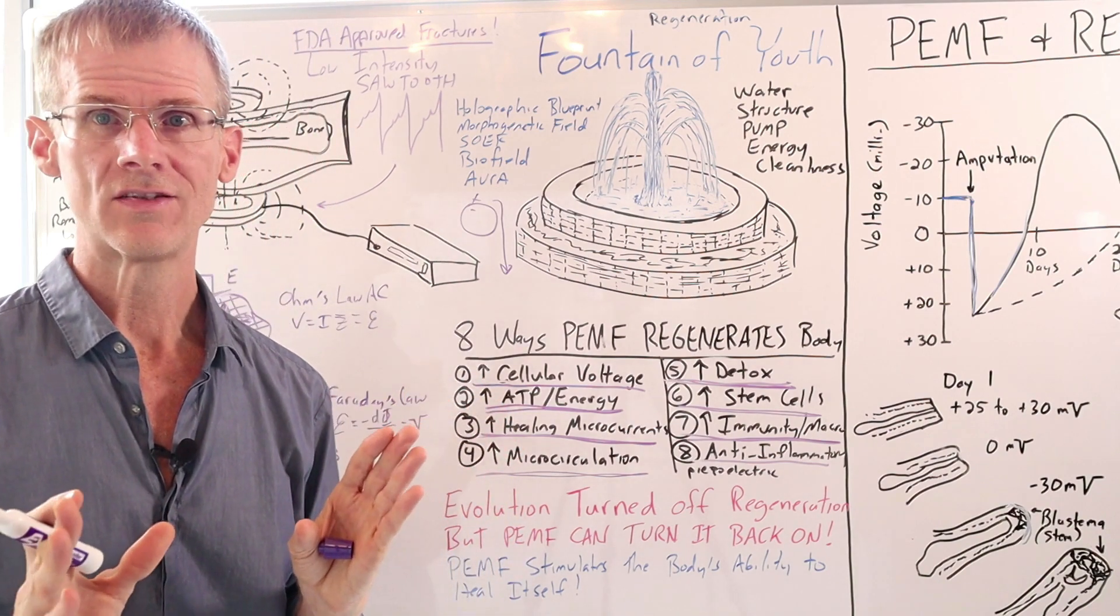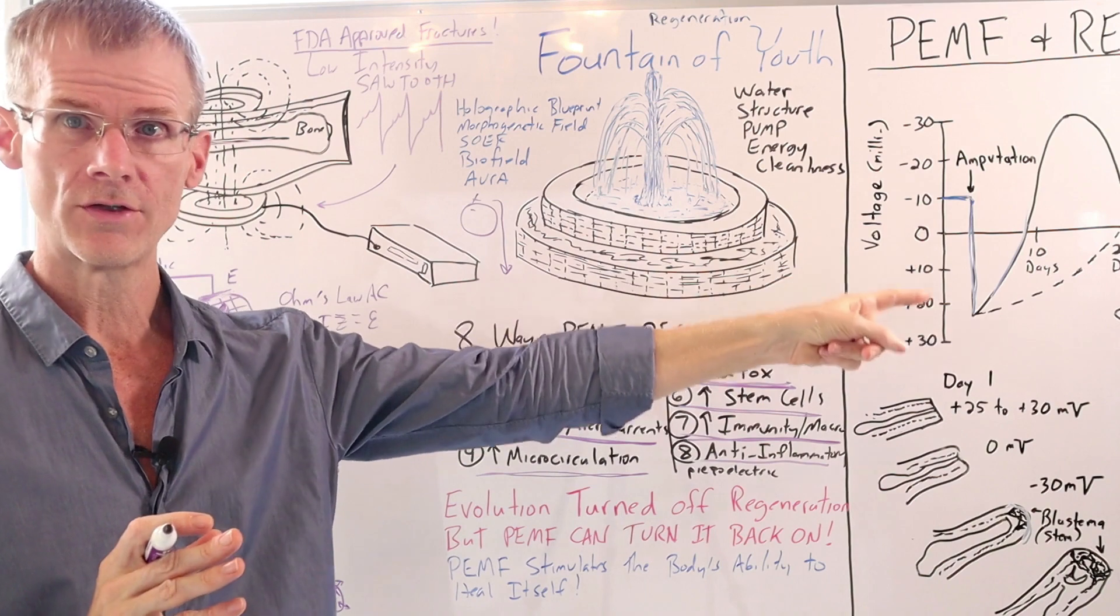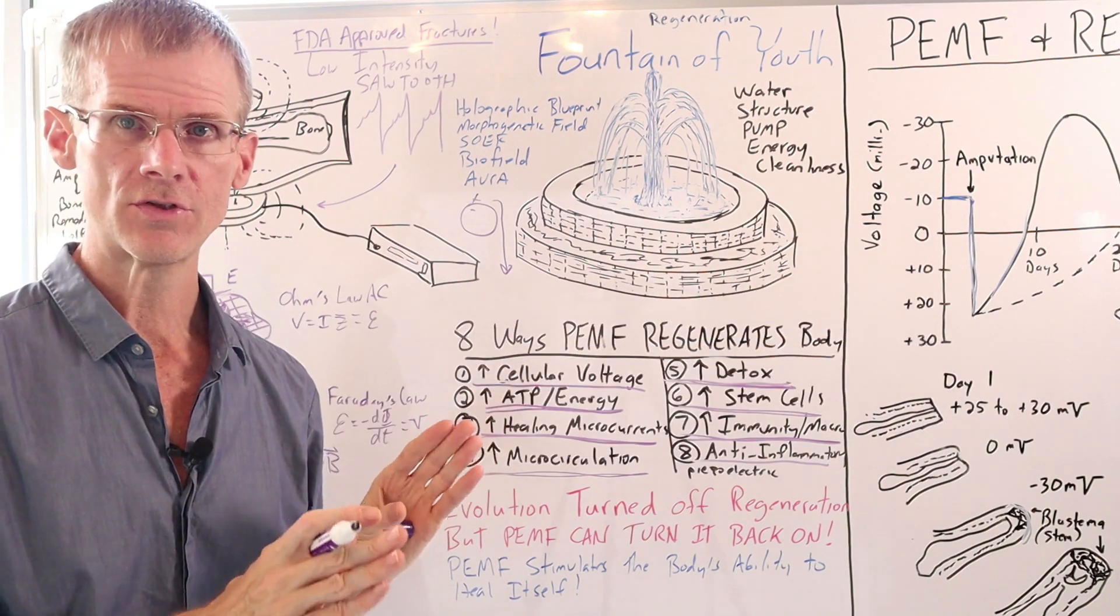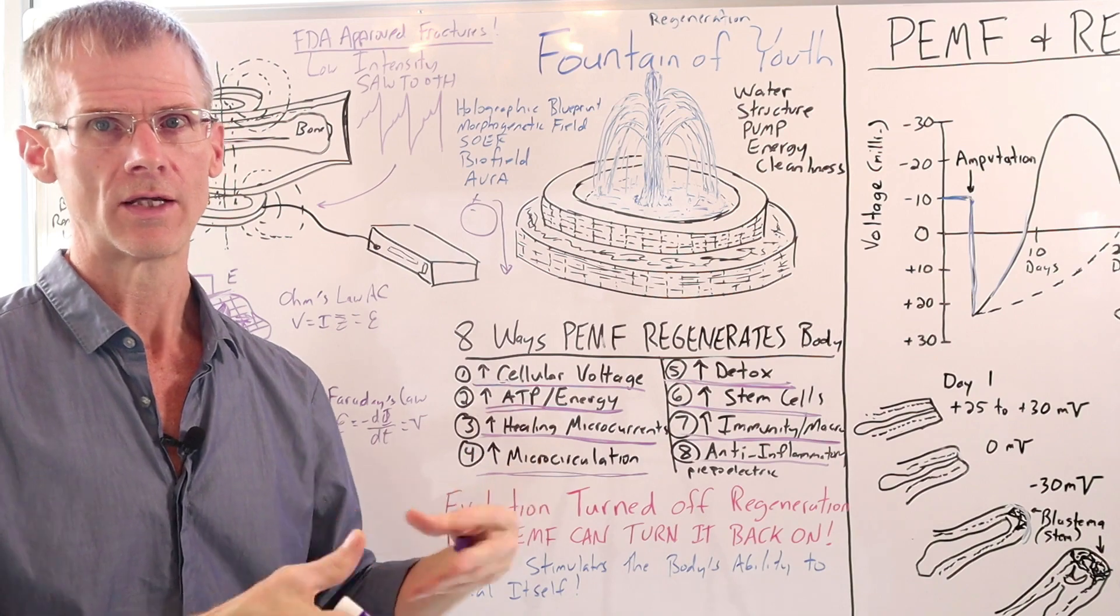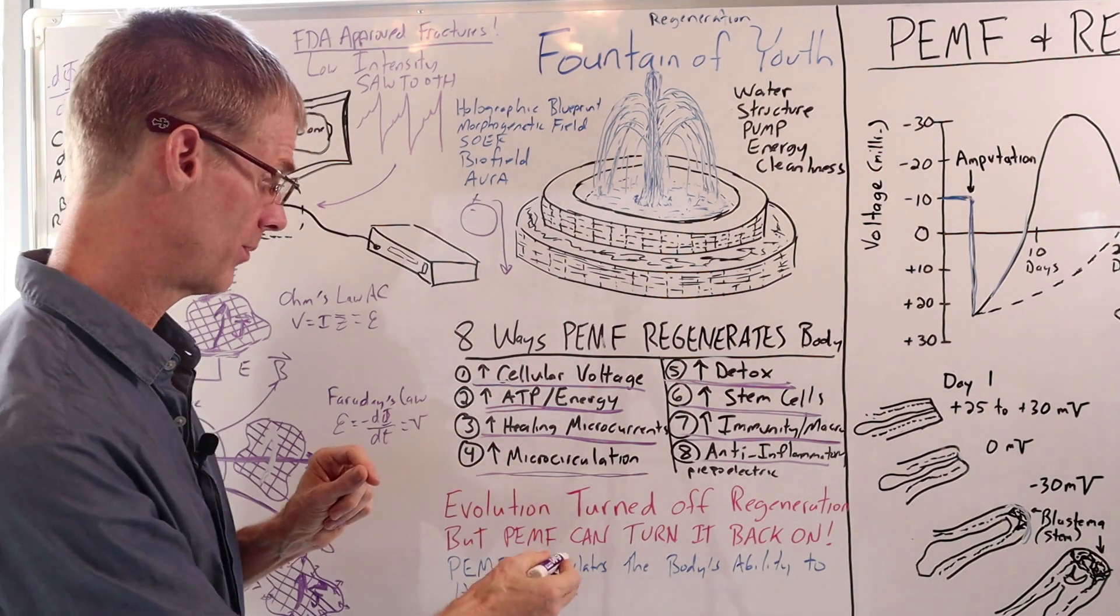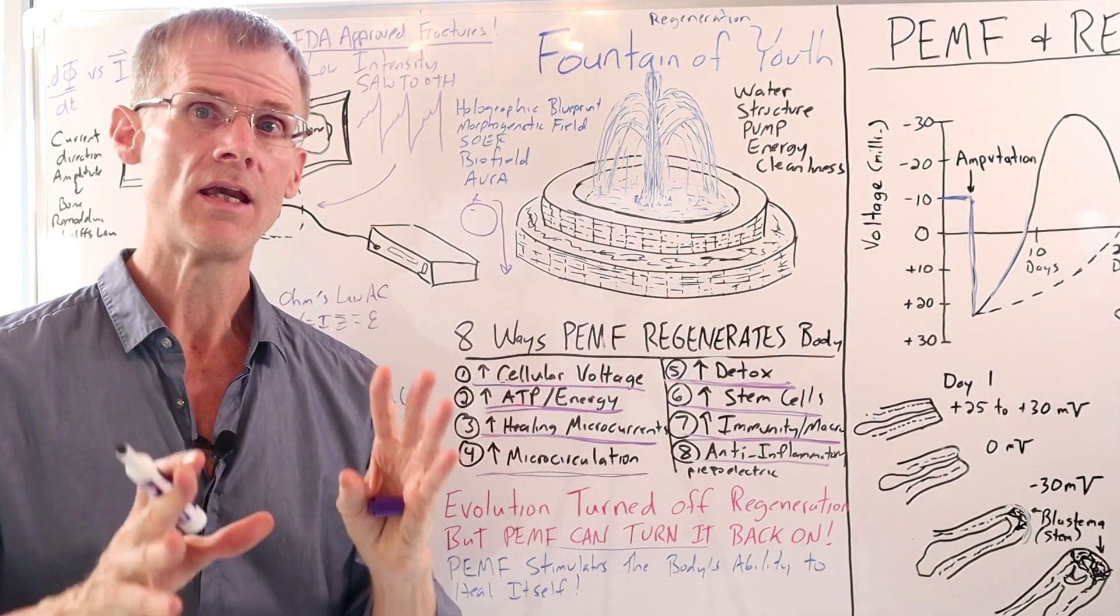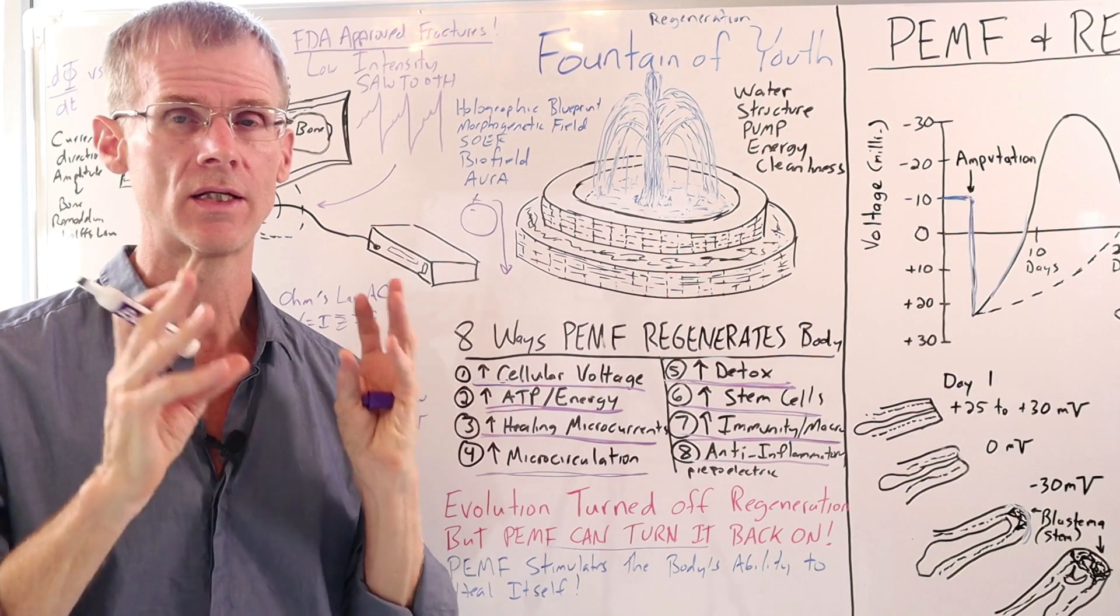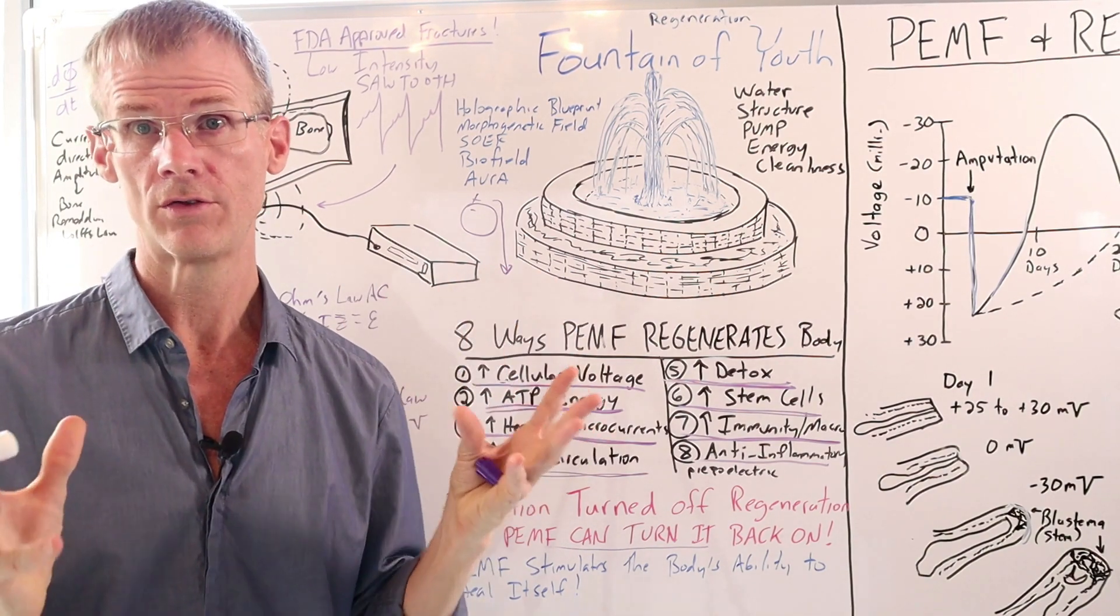So I just want to conclude by saying that it seems for some reason, and you can see it going from salamanders to frogs, that evolution seems to have turned off our ability to regenerate entire limbs or like radical types of regeneration. But I'm here to tell you that PEMF therapy can turn on what evolution has turned off. And the key is voltage. The key is stimulating the energy at the cell level and helping those cells to divide and create new tissue.